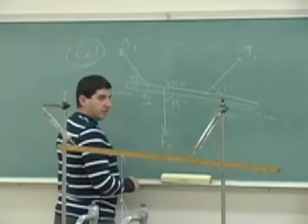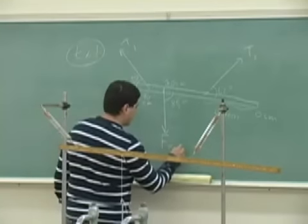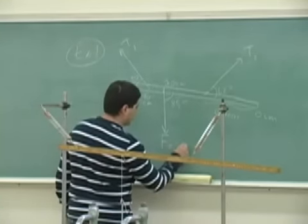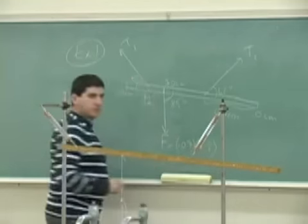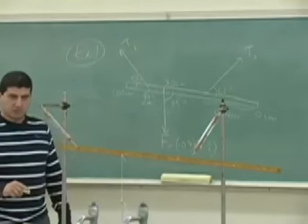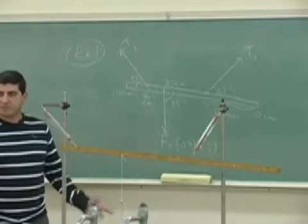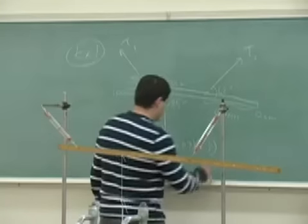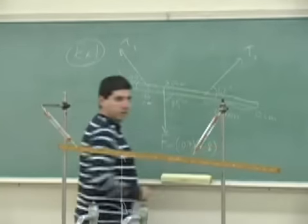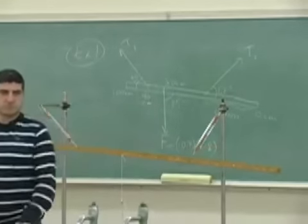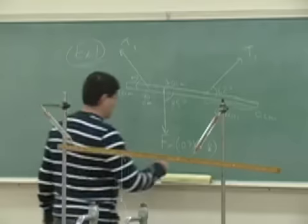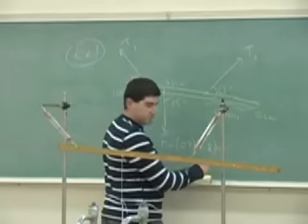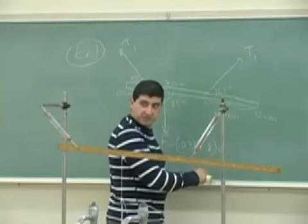So I have to change that to force, right? 70 grams, so 0.07 kilogram, times 9.8, to change it to newtons, 70 grams is 0.07 kilogram. So what do you get there? Point 686? 0.686 newtons.